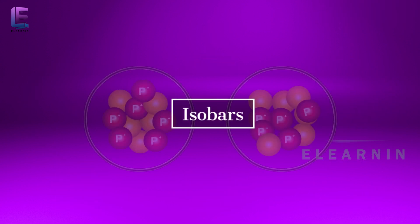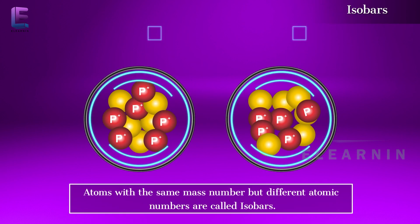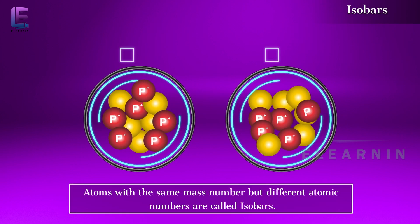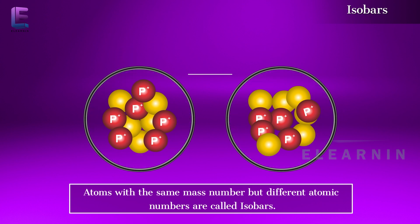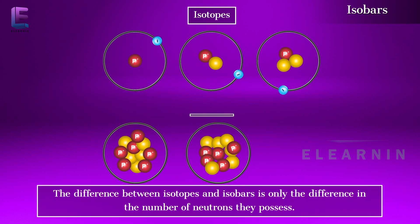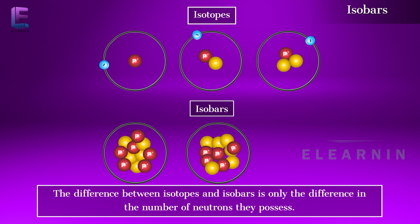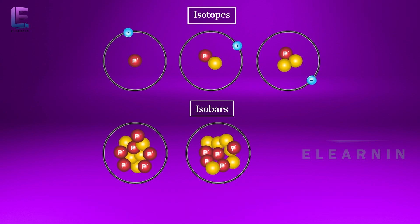Isobars are atoms with the same mass number but different atomic numbers. The difference between isotopes and isobars is the difference in the number of neutrons they possess.